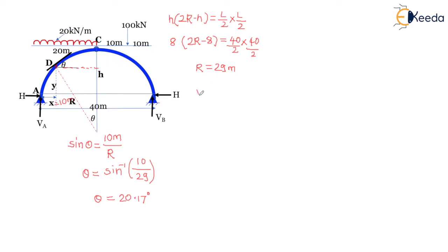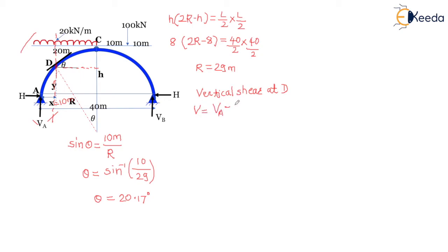To calculate the vertical shear at point D, we consider the forces to the left: VA minus the UDL over 10 meters. So V = VA − 20 × 10 = 325 − 200 = 125 kN.